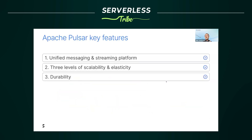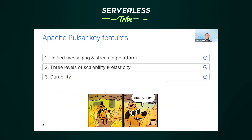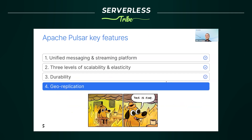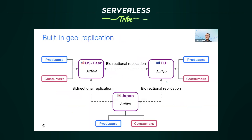What if you lose a whole region or data center? That's where geo-replication steps in. Geo-replication provides disaster recovery — you deploy several clusters in different regions or data centers. If you lose a region, you can recover from it. Pulsar can replicate data to different regions automatically and bidirectionally, and this is a built-in feature — setting it up is basically just configuration.